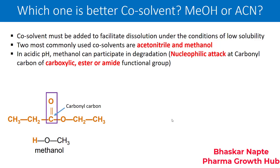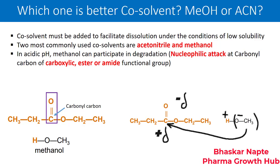In acidic conditions, methanol can participate in degradation via nucleophilic attack on the carbonyl carbon at carboxylic, ester, or amide functional groups. To understand this, consider an ester functional group: it has a carbonyl group — a carbon double-bonded to oxygen — and the carbon of this carbonyl functional group is called the carbonyl carbon. The problem with this carbonyl carbon is that it is attached to a highly electronegative atom like oxygen.